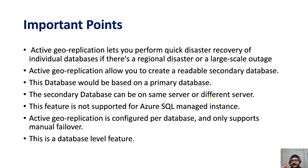It is always good practice to create replication between two different regions, so in the case of a disaster, if something goes wrong with one data center or region, you have your data in another region — it is not possible for both regions to suffer outages at the same time. Important: this feature is not supported for Azure SQL Managed Instances. Also, Active Geo Replication is configured per database and only supports manual failover — whenever you need to failover to your secondary database, you have to do it manually. There is no automatic process.